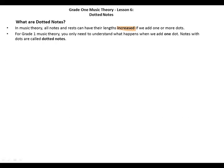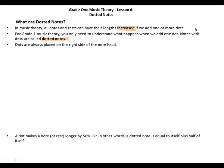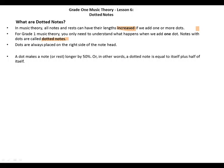For Grade 1 music theory, you only need to understand what happens when we add one dot. Notes with dots are called dotted notes. Dots are always placed on the right side of the note head. A dot makes a note or rest longer by 50 percent. In other words, a dotted note is equal to itself plus half of itself.